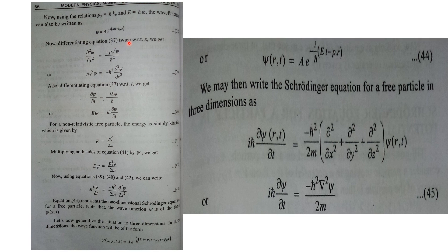Now we are going to differentiate the previous equation twice with respect to x. When you differentiate equation 37 once, and then differentiate the result again, you get: d²ψ/dx² equals minus p²/h-bar² times psi. Rearranging this, p²ψ equals minus h-bar² times d²ψ/dx².